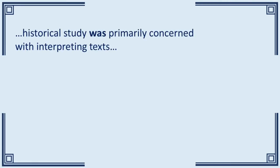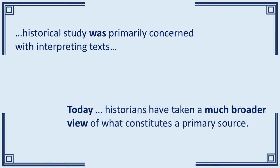Until the late 19th century, historical study was primarily concerned with interpreting texts — either literature that talked about the past, what we would call histories, or documents that recorded some event, the archives. Today, well, to be honest, since at least the early 20th century, historians have taken a much broader view of what constitutes a primary source, incorporating archaeology, numismatics, and art history, amongst other things. But there is still a lot of work with texts.